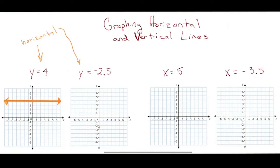Then I'll get my straight edge, draw the line, and then I'll put arrows on the end to show that it goes on forever. And that's how you graph y equals negative 2.5.